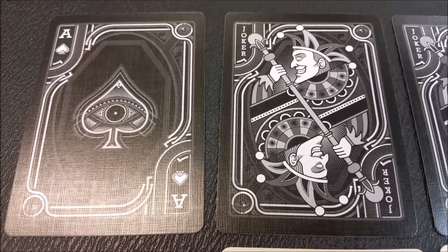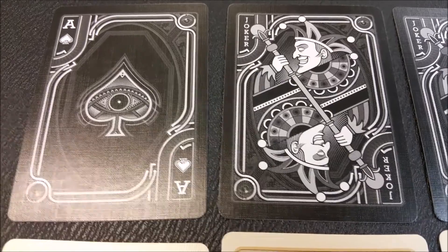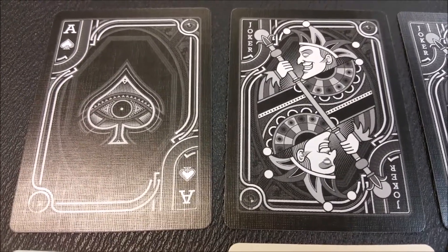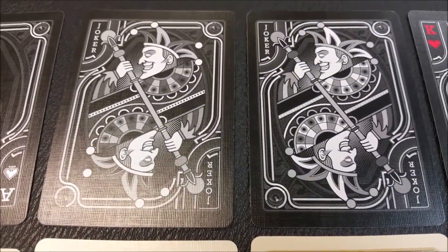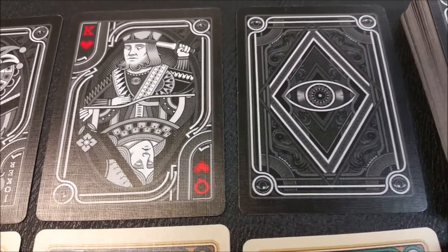I just want to grab the camera real quick and show you what some of these cards look like close up. This is your Blackout Ace of Spades, and the two jokers, and here are your two gaff cards, the double backer, and the double ender.